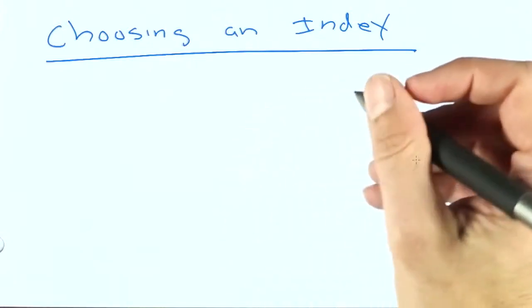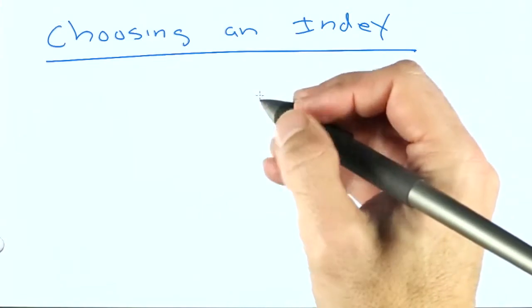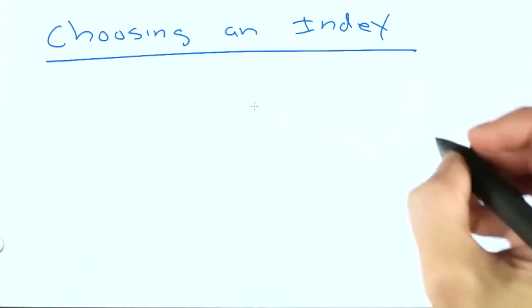We've learned about the explain command, which is how we figure out what the database is doing when it does a query. But what does the database do to figure out which index it should use?